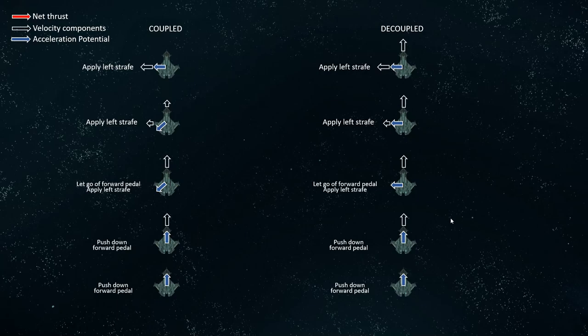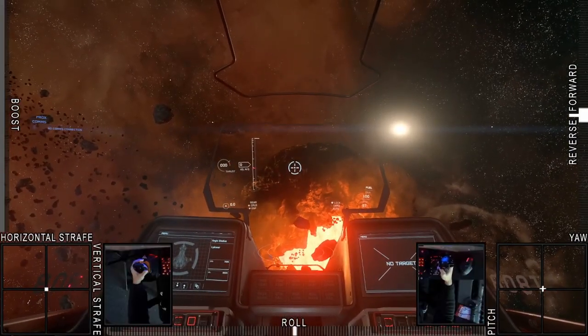From this depiction, we can see why coupled mode is so much more intuitive for many people. When you deflect your stick to the left, you're saying: I want to strafe left and that's all I want to do — I don't want to go forward anymore, I just want to go left. That's why I let go of my forward pedal. In decoupled mode, you're saying: I want some leftward translation in addition to whatever my current translation is.